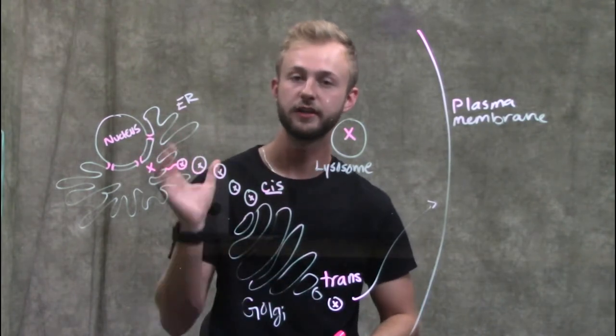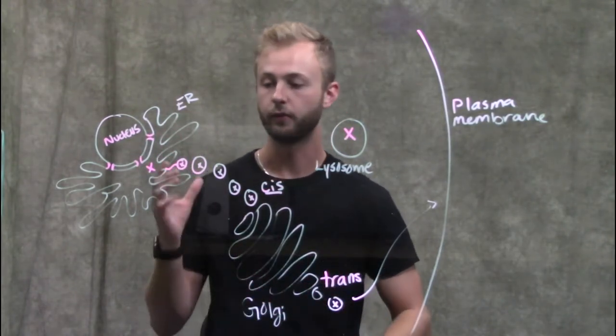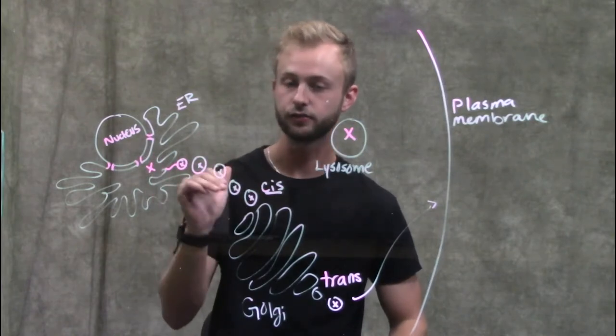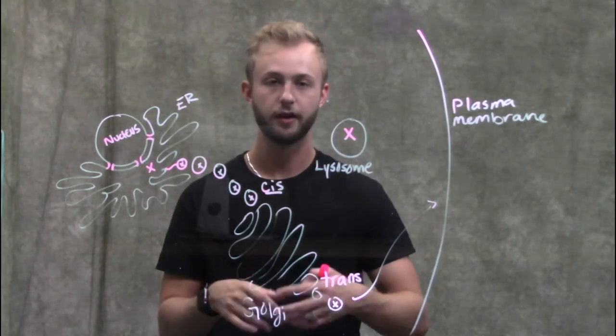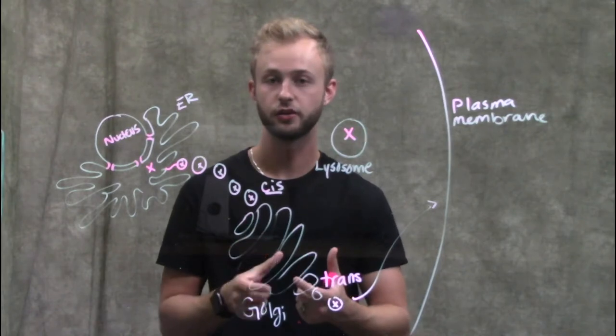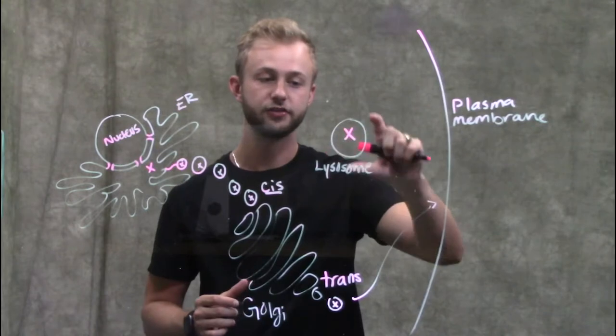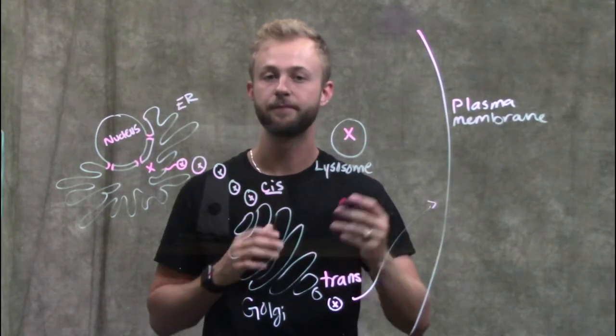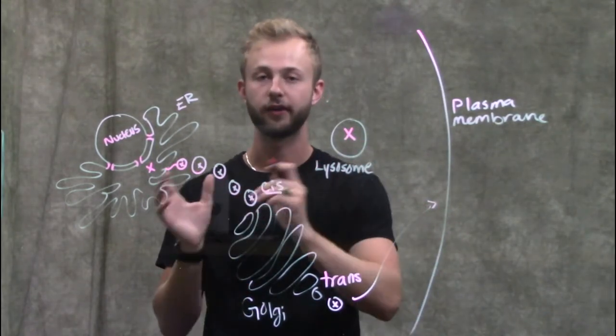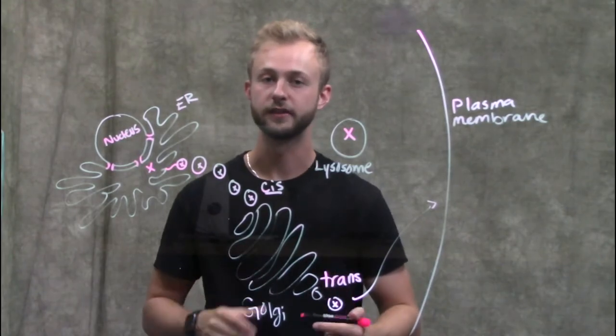We can send them back to the endoplasmic reticulum to be reused in more of these vesicles. We can send them to the Golgi body if there's something in there that can be used in the Golgi body. It really just depends on the cell's needs, but the lysosome, because it's part of this endomembrane system, is capable of transporting things to these different cellular compartments.